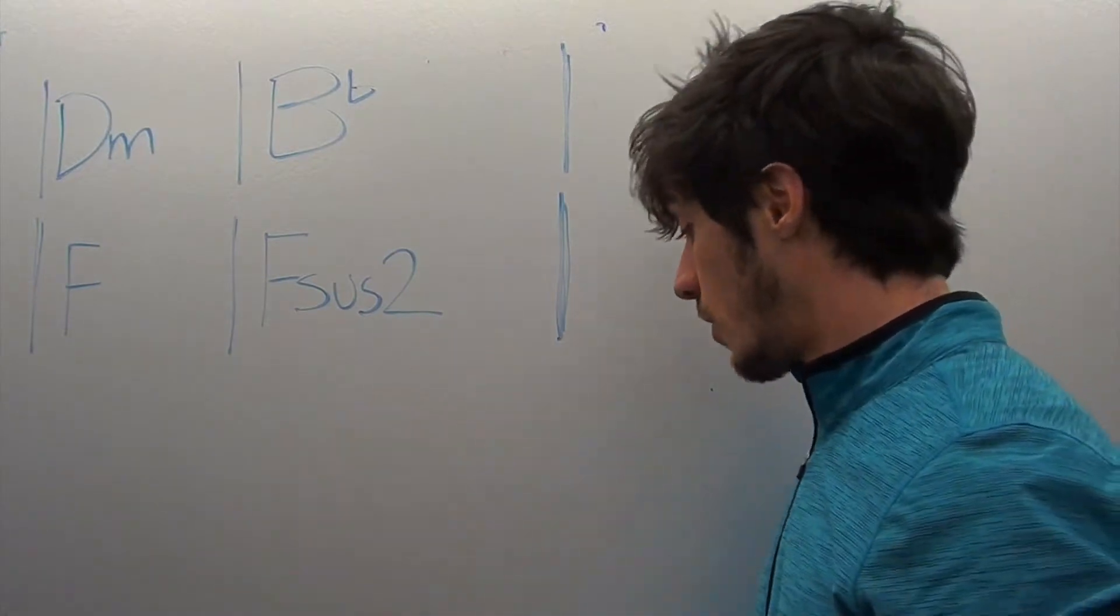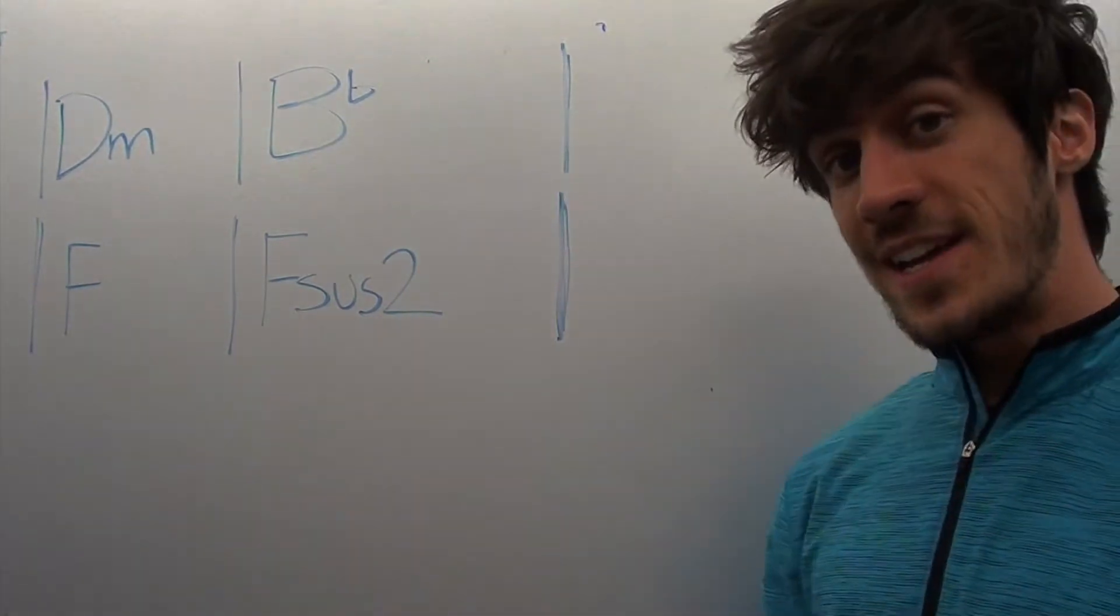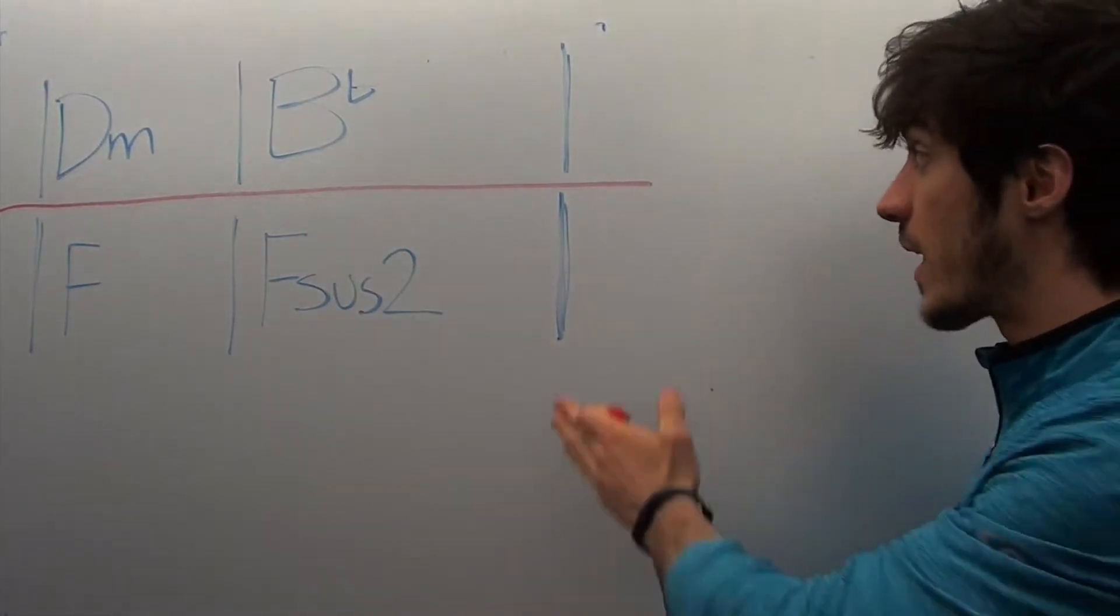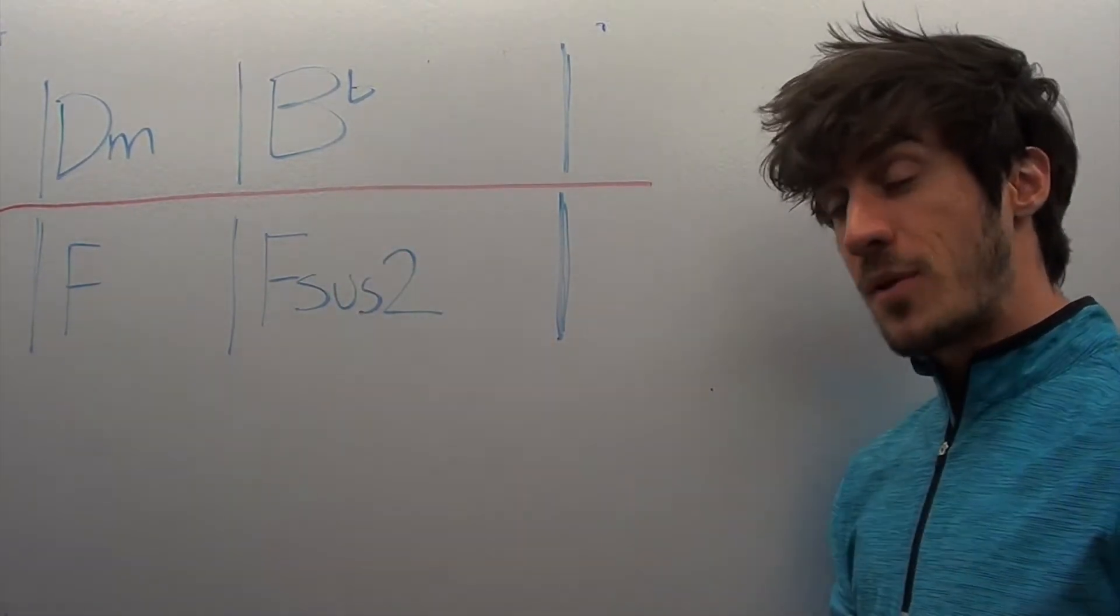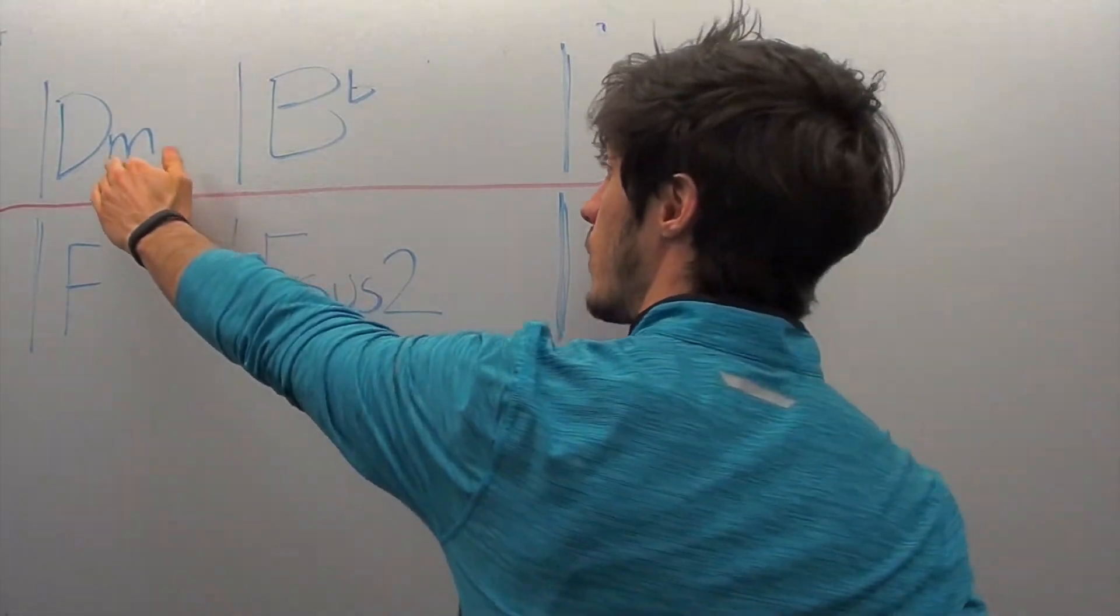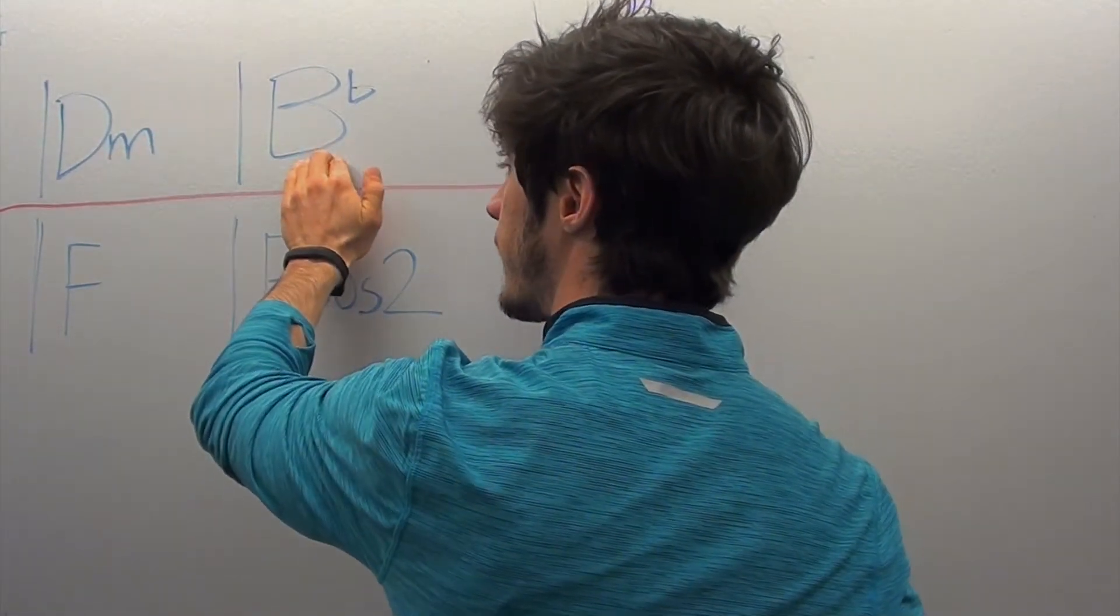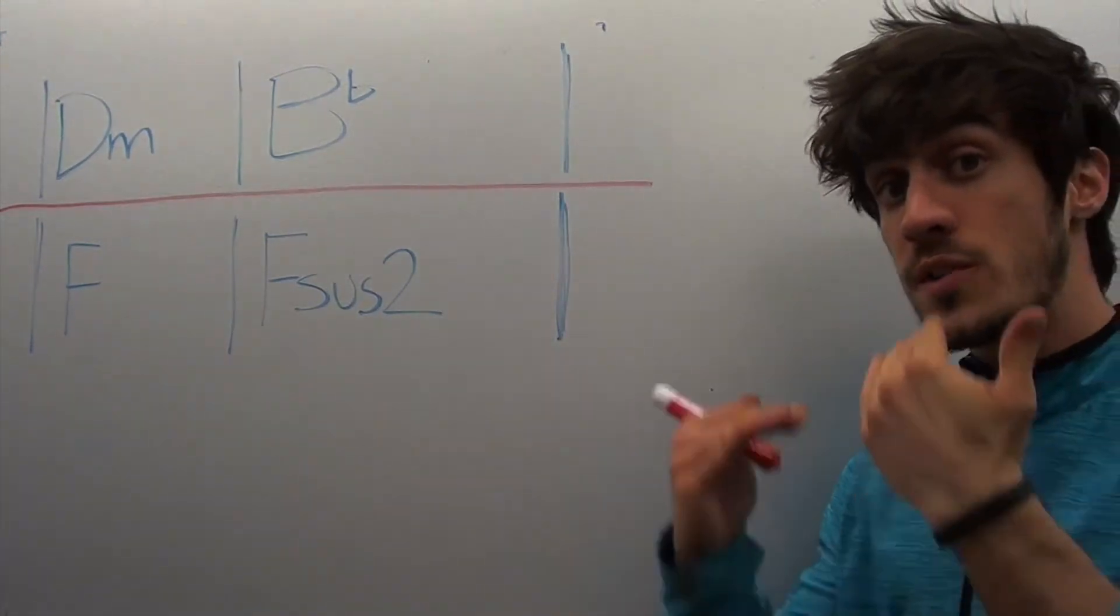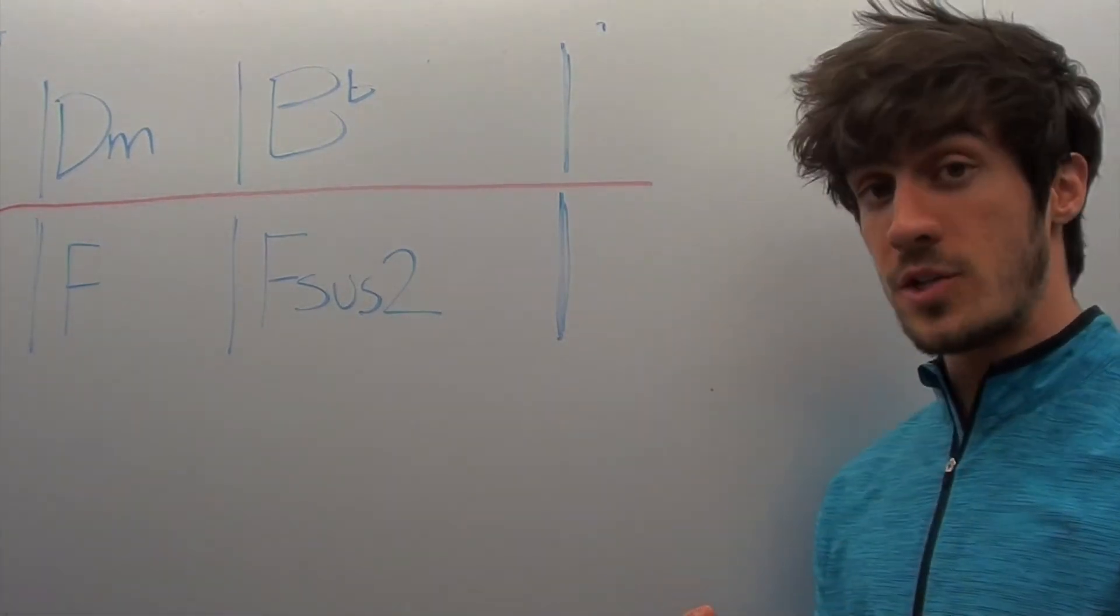The other thing that's really cool about this progression is that it's asymmetrical. Asymmetry means if you draw a red line through it, right down the middle like I've done here, it's not the same on both sides. And you can see, we've got a D minor and a B flat up here, and then an F and an F sus 2 down here. So the chords are different on either side of the progression.